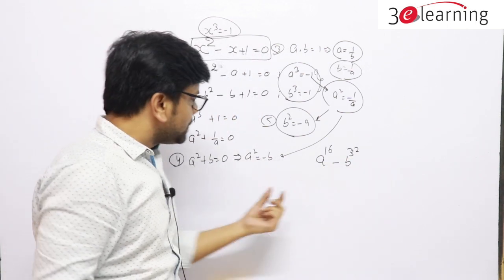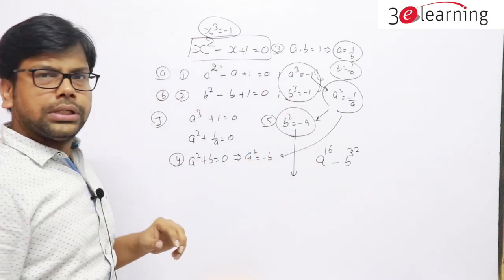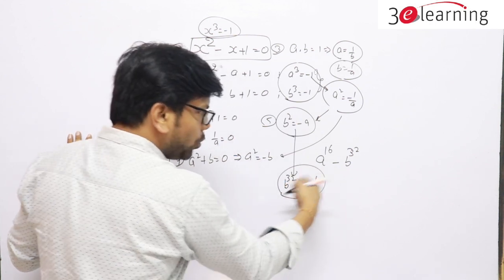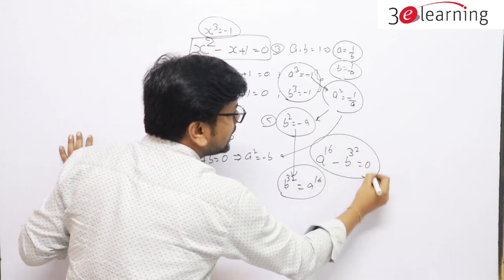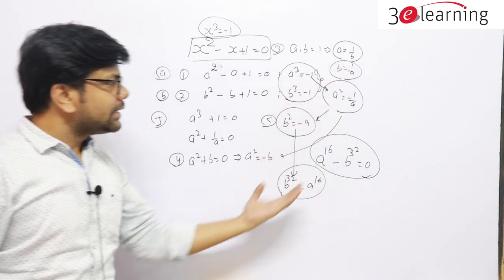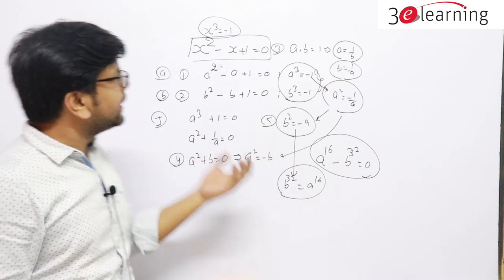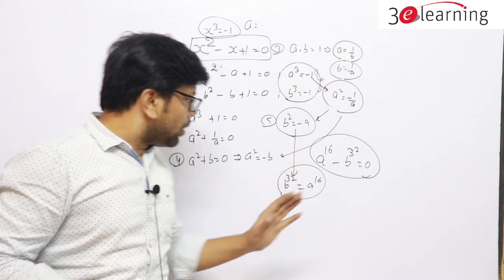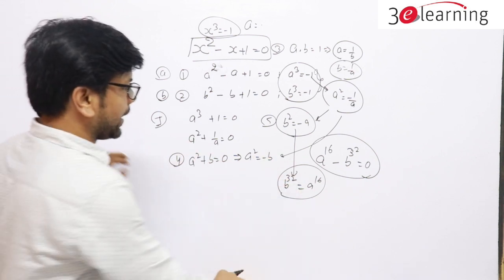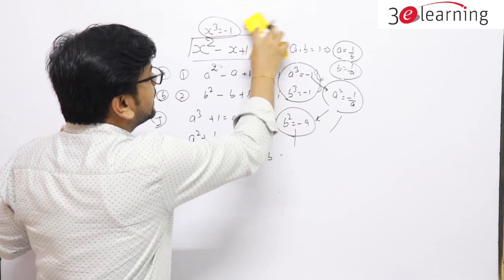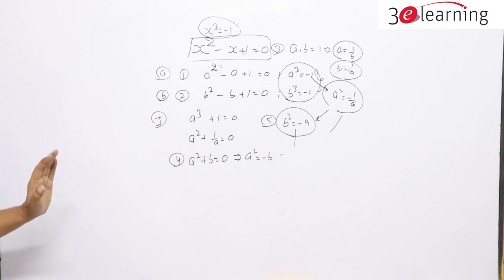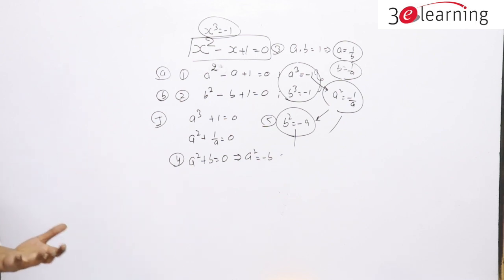It's simple. We know b² = -a. Squaring both sides repeatedly: b⁴ = a², then squaring again b⁸ = a⁴, b¹⁶ = a⁸, b³² = a¹⁶. So a¹⁶ - b³² = a¹⁶ - a¹⁶ = 0. This is hardly a 2-3 second question if you know the conditions. The answer is 0. Please take a screenshot of this screen and keep it in your folders to revise before your exam.